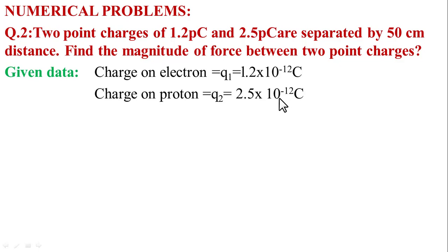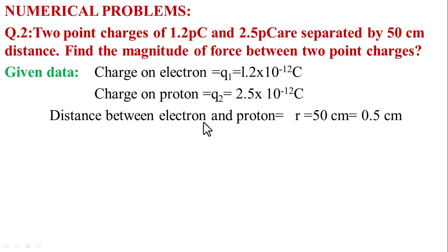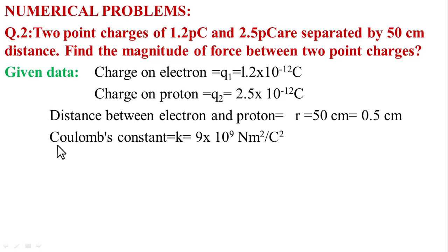Q2 equals 2.5 multiplied by 10 raised to power minus 12 coulombs. The distance between the charges R equals 50 cm, which we convert to 0.5 meters. The Coulomb constant K equals 9 multiplied by 10 raised to power 9 Newton meter squared per coulomb squared.